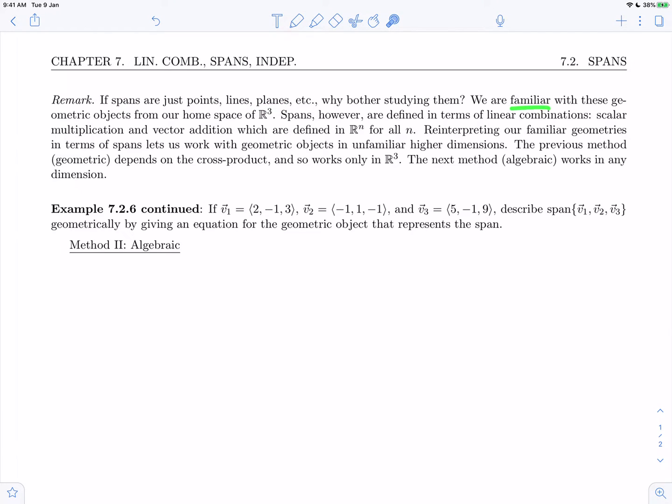We're already familiar with these geometric objects from our study of them in R3. Spans, however, are defined in terms of linear combinations—scalar multiplication and vector addition—which are defined in Rn for all n. Reinterpreting our familiar geometries in terms of spans lets us work with geometric objects in unfamiliar higher dimensions. The previous geometric method depended on the cross product and so worked only in R3.